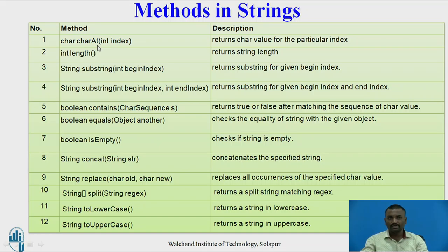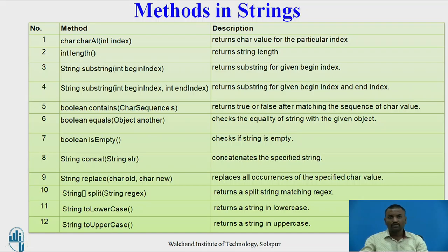The first method is charAt. Its return type is char, method name is charAt, and the input parameter is an integer. When you call this method, it returns the character present at a particular index. The second method is int length — return type is int, method name is length, and there are no input parameters. It returns the length of a string when called on a string object.